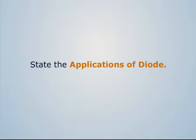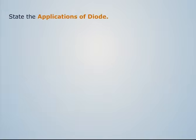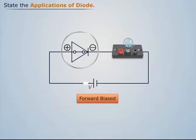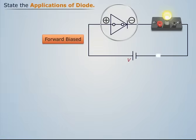State the applications of diode. Consider a circuit with a diode as one of its elements. We know that when a diode is forward biased, it behaves as a closed switch, allowing current to flow through the circuit.